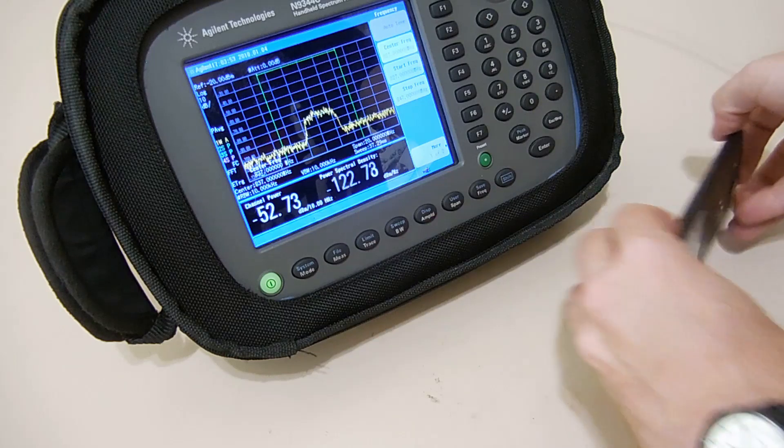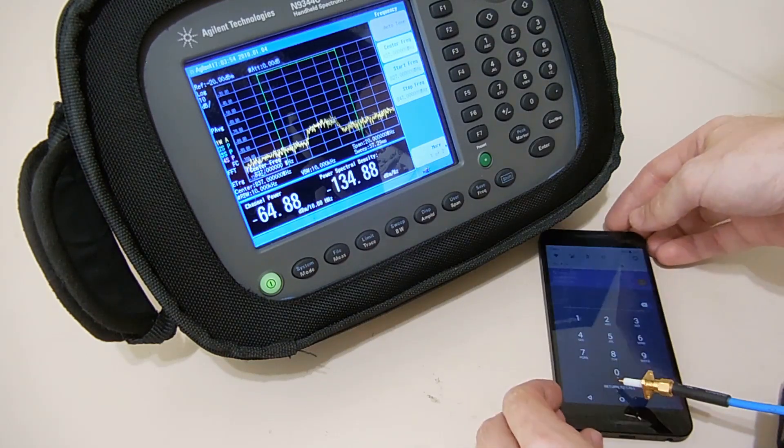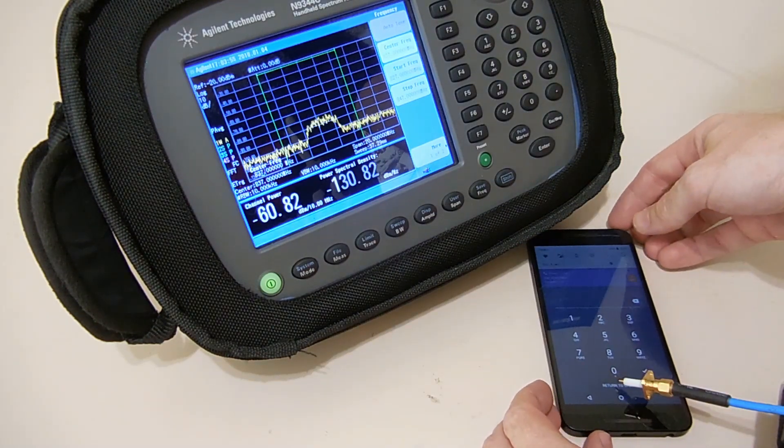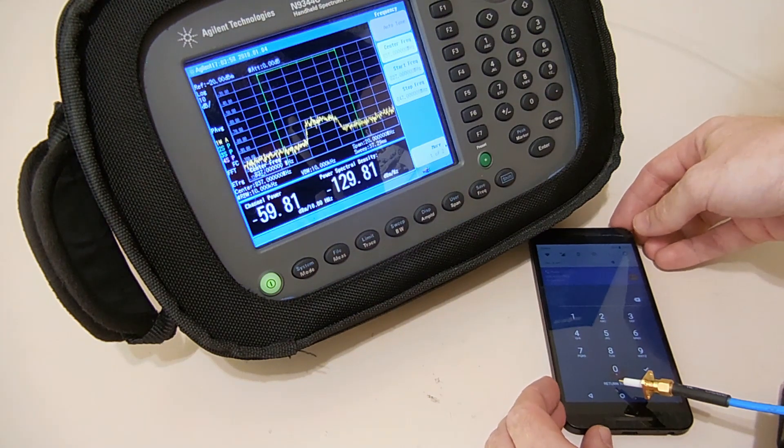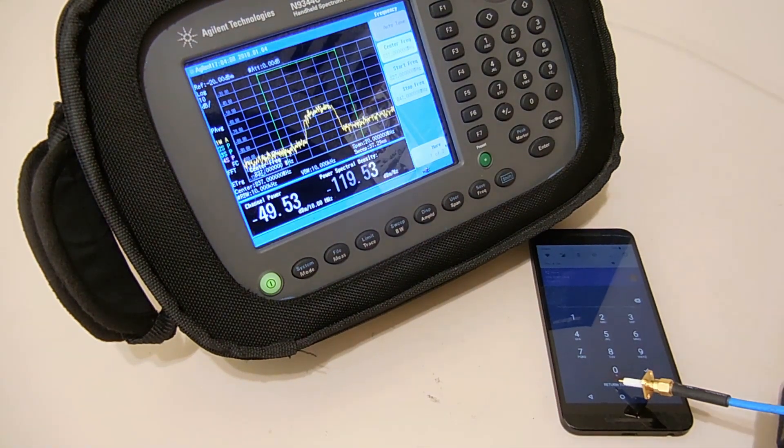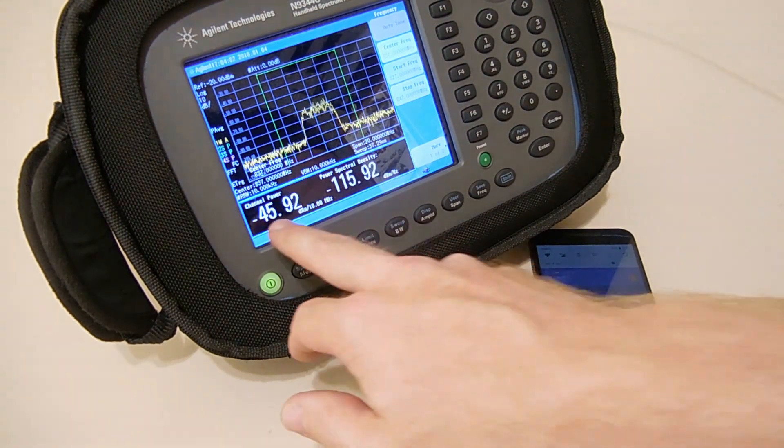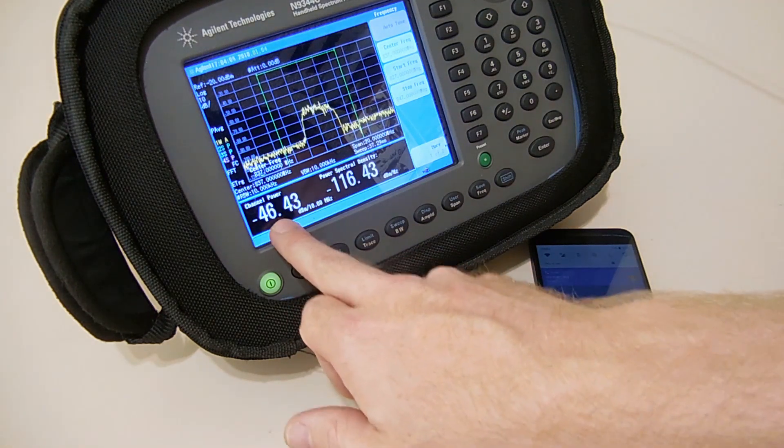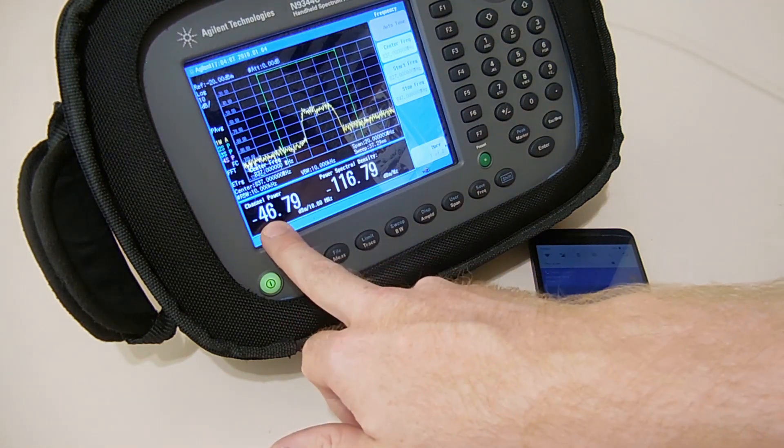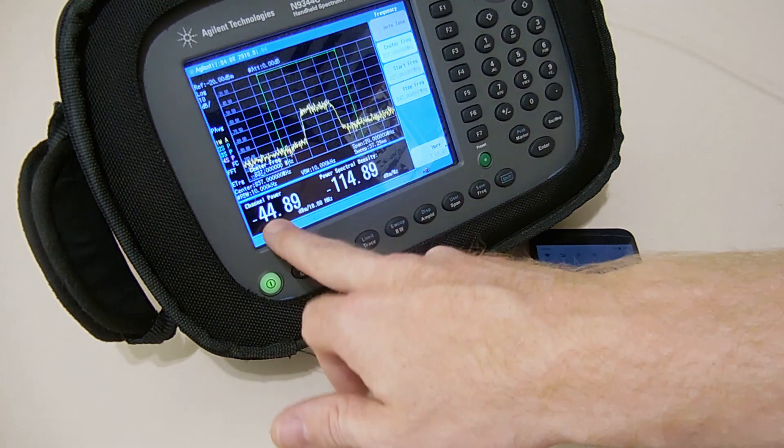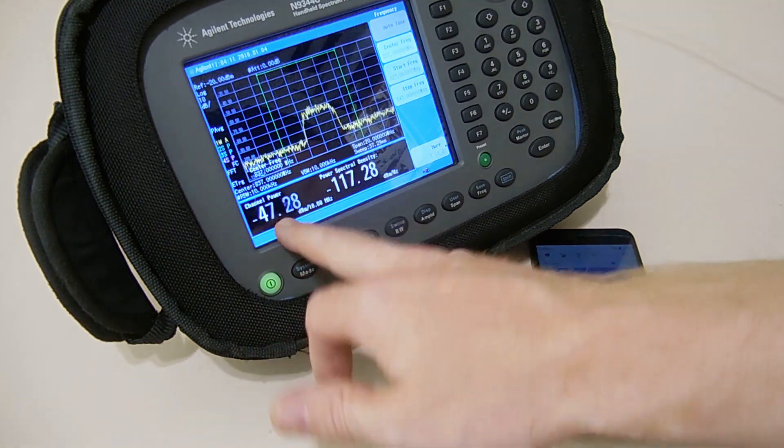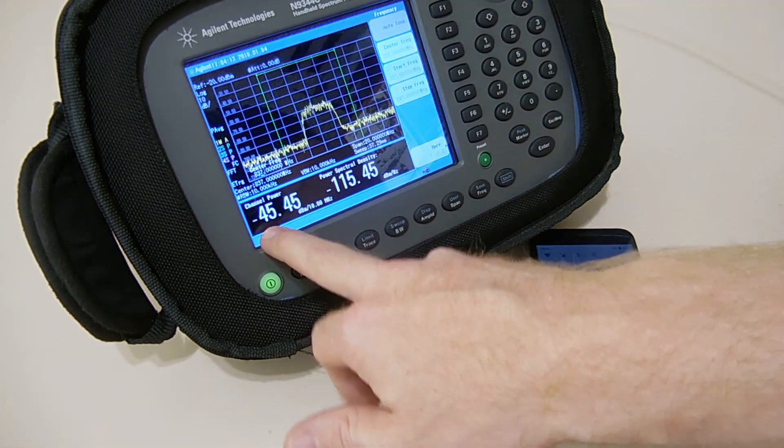If I turn the phone over and do the front, because previously on the front the signal was not as strong, the signal power has dropped. It's now around the minus 45 mark, dipping to minus 50. So we lose about 5 to 10 dB just by turning the phone over.